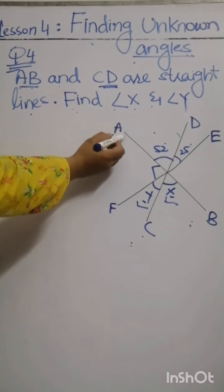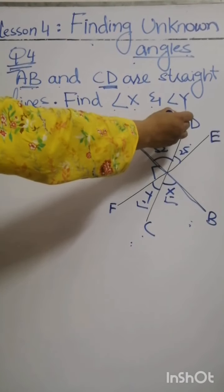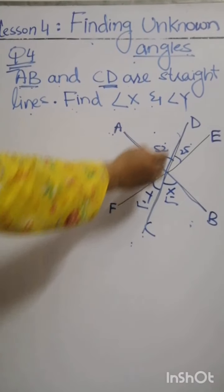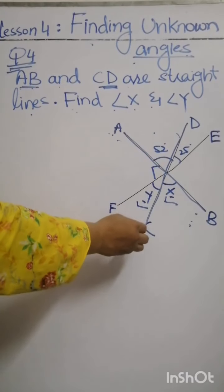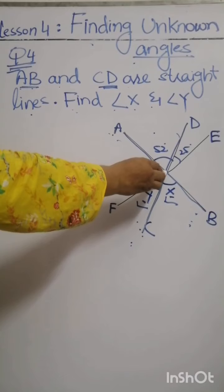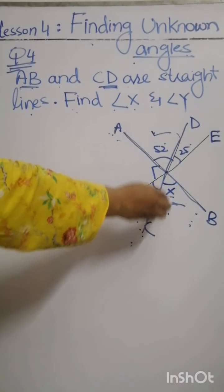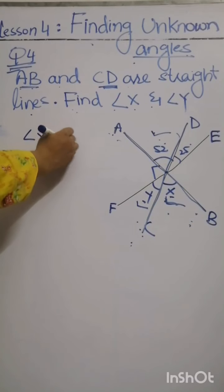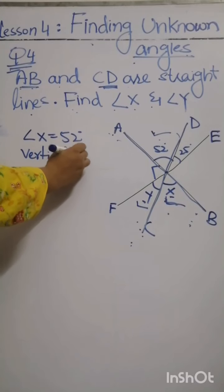When I draw AB and CD, they make a cross. When two lines intersect each other at one point, the opposite angles are equal. Here we have x and 52, so angle x equals 52 degrees because it is a vertically opposite angle.